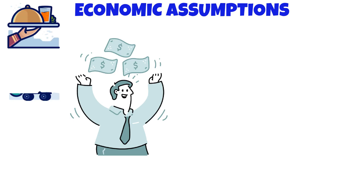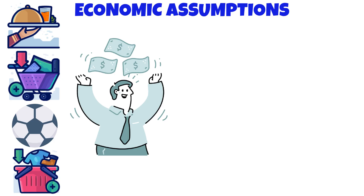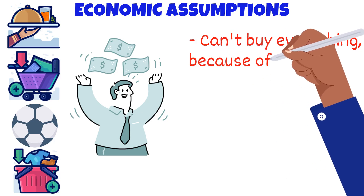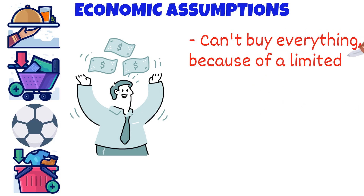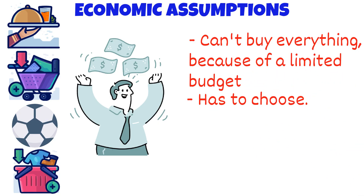His options are: 1. Go out for food. 2. Go on a shopping spree. 3. Get tickets for the euro. 4. Buy his sister some clothes. James can't buy everything he wanted because he was limited by his budget of $100. James then has to choose one option. To help him make the decision, he ordered them according to his preference, which allowed him to choose going out for food.